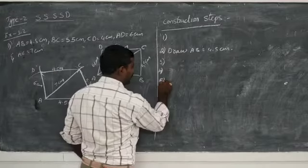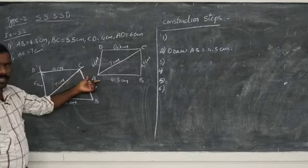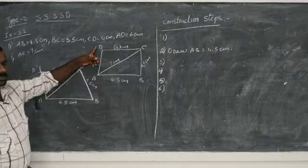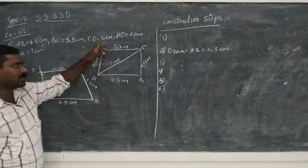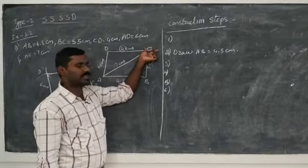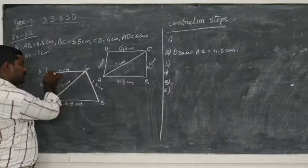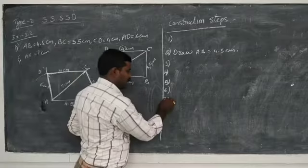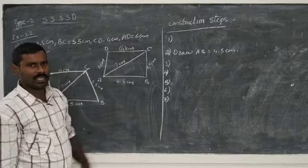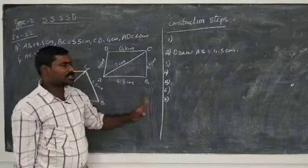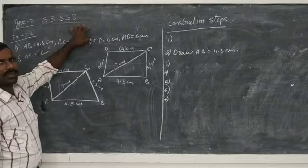Sixth step: take 6 centimeters radius with center A and draw an arc. Similarly, take 4 centimeters radius with center C to cut the first arc, and join CD and AD. Last step: join CD and AD. Now we get the ABCD quadrilateral. This is the second type of quadrilateral when four sides and one diagonal is given.